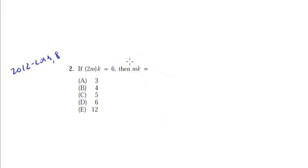Last one, if 2 times m times k is equal to 6, then mk equals, so don't get fooled by the way they write the parentheses here, we can just easily write this as 2mk equals 6, we don't really care the parentheses around here, it's the associative property, we can just multiply them by anything in any order.